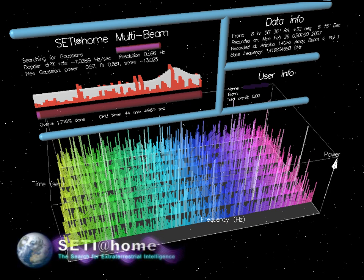The Serendip program takes advantage of ongoing mainstream radio telescope observations and analyzes deep space radio telescope data that it obtains while other astronomers are using the telescope.